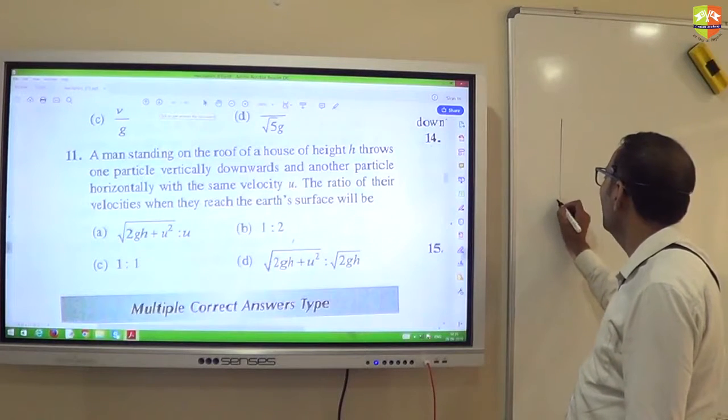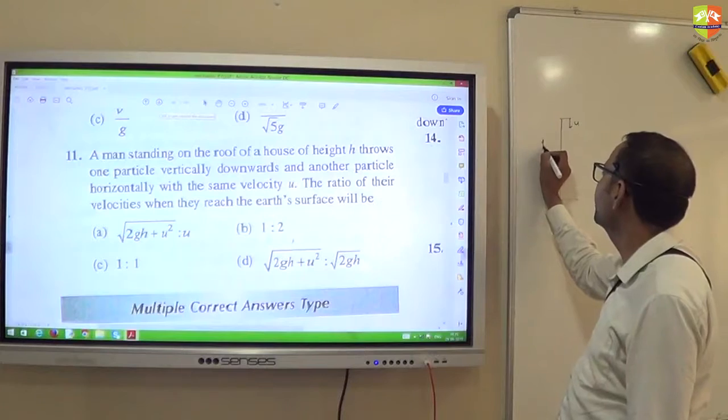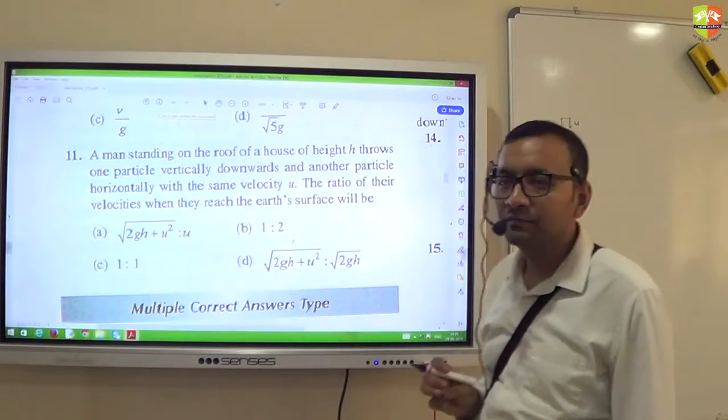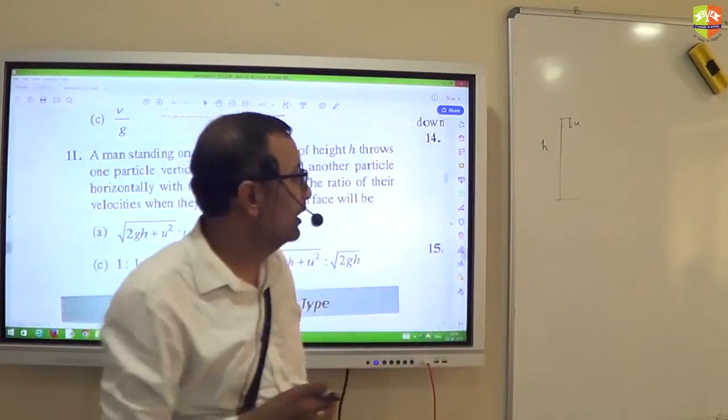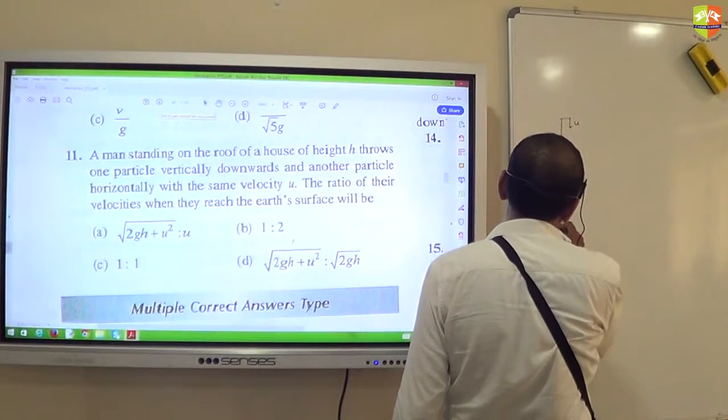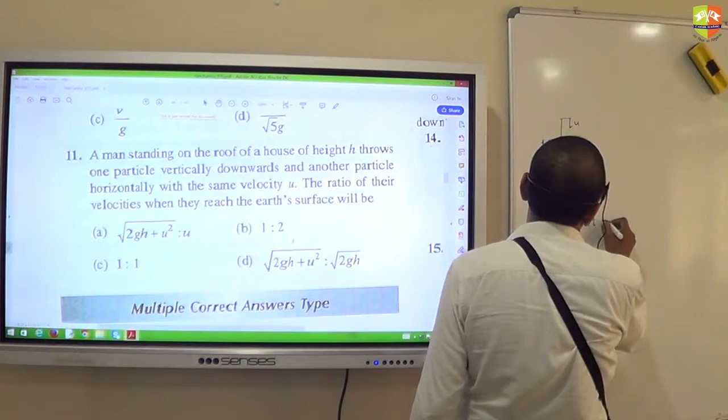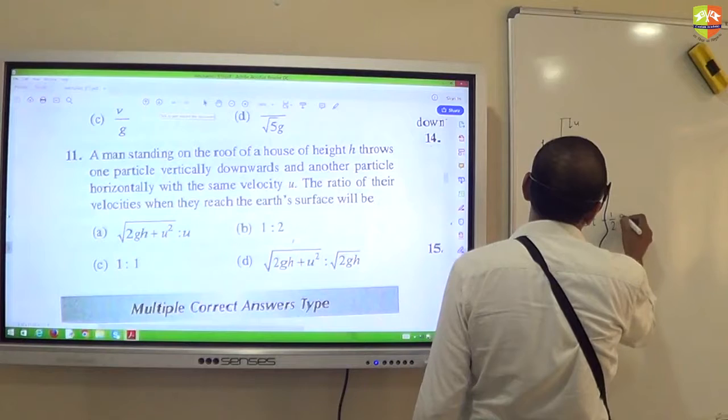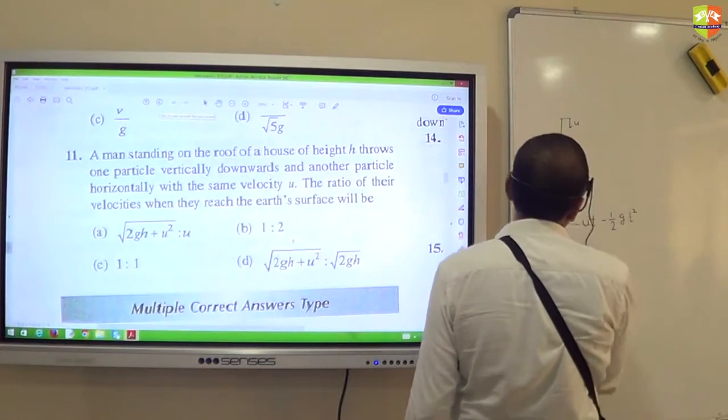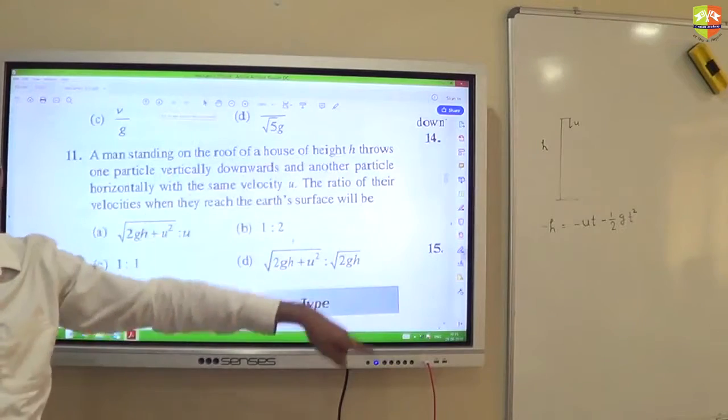So if it is thrown vertically now with velocity u, height is h, how much time it will take? You can use s equal to ut plus half gt square. So s is minus h. Initial velocity is minus u equal to t minus half gt square.